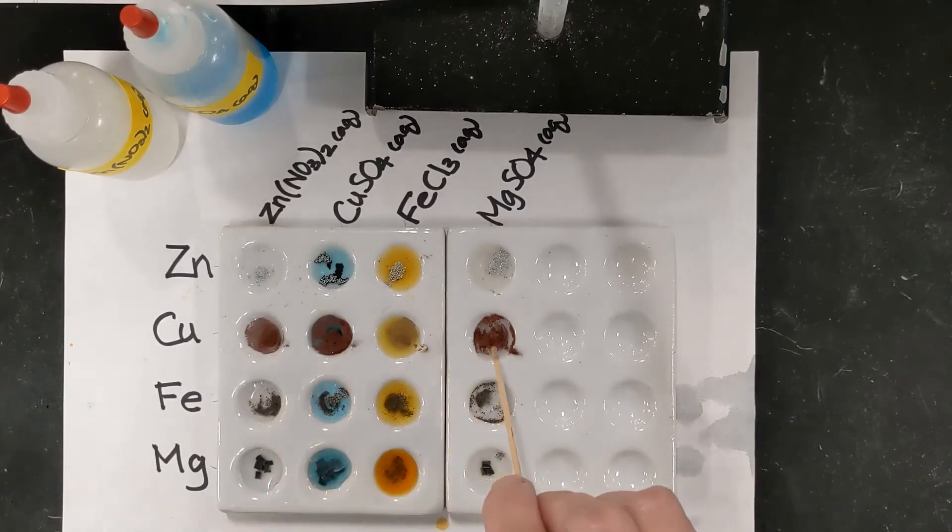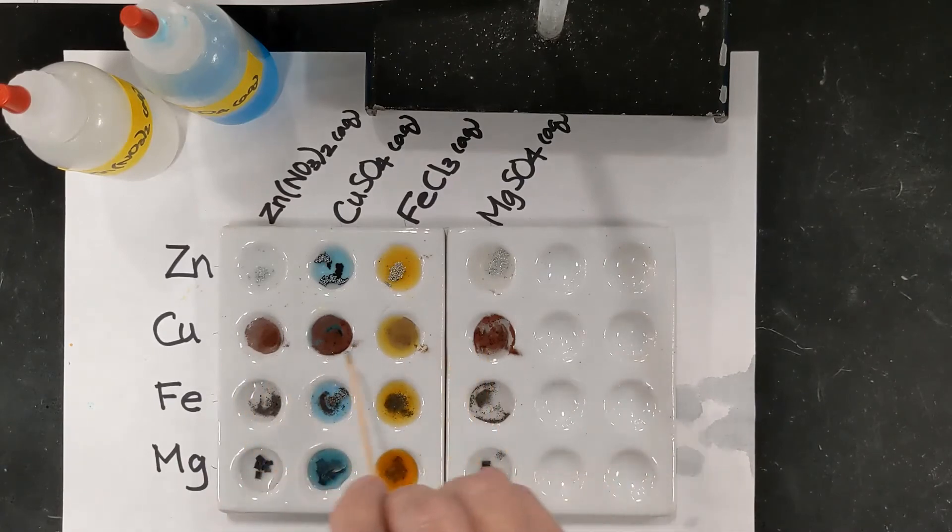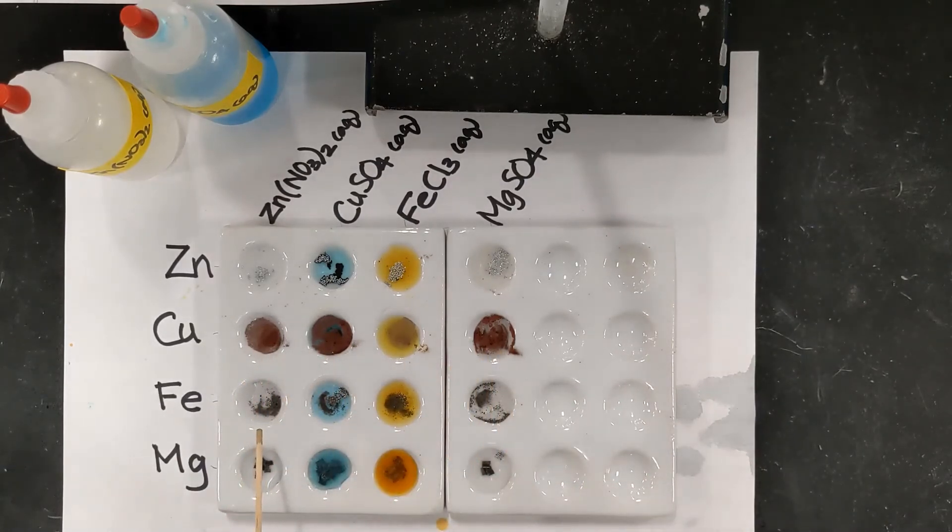In our iron row, let's see, this first well, the iron powder looks pretty much unchanged.